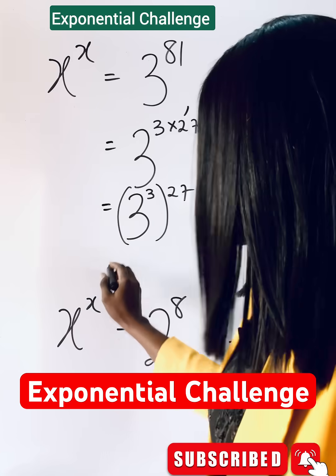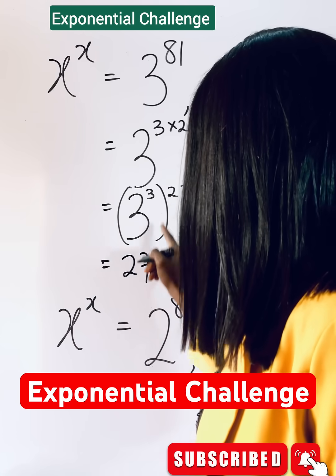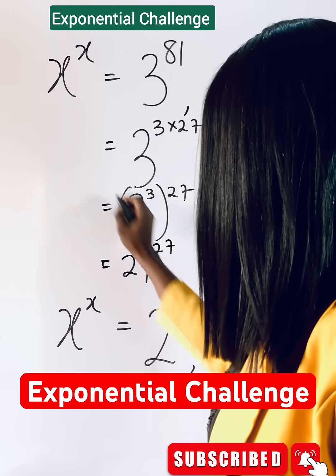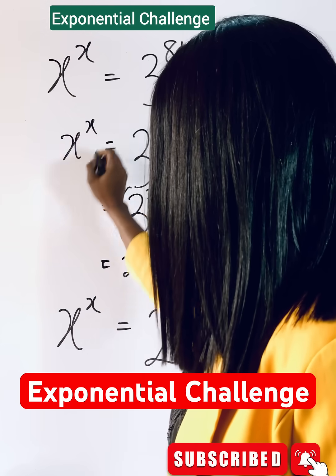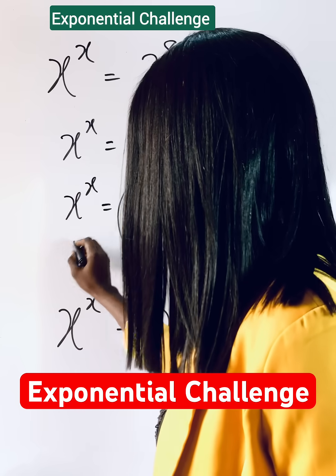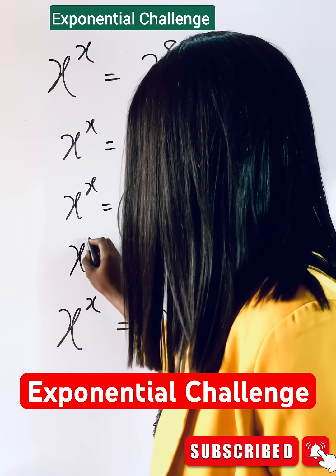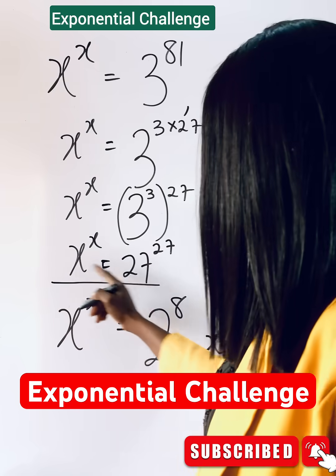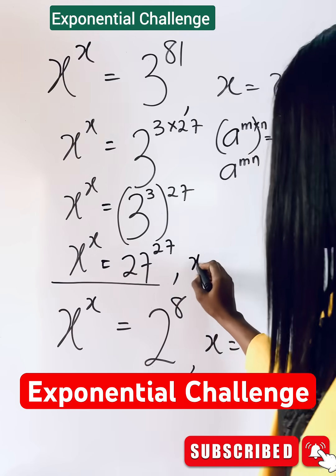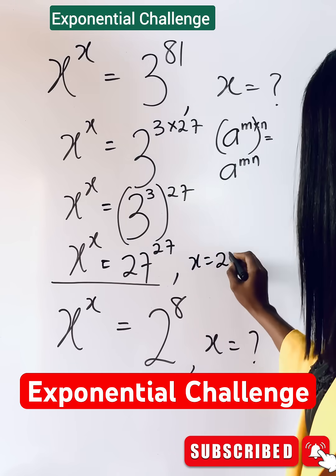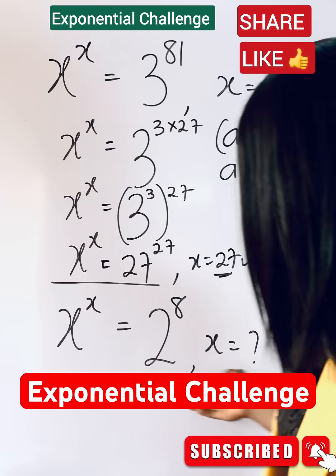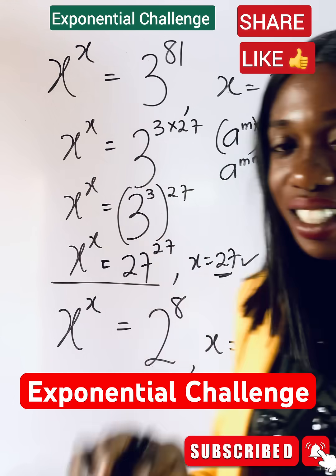So bring down x to the power of x, x to the power of x, and x to the power of x. You see this is equal to this, so your x will give you 27. What do you think about this? Let us know in the comments. Bye!